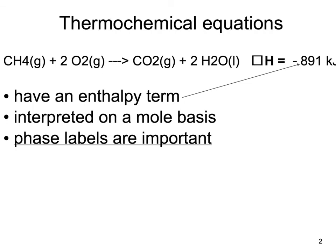When writing a thermochemical equation, you write the normal balanced equation, use your phase labels — they're very important here — and we also add delta H. Our delta H here is negative 891 kilojoules, and that enthalpy term is what makes this a thermochemical equation. You can interpret this as one mole of CH4 reacting with two moles of O2 giving one mole of CO2 and two moles of H2O, and that reaction gives off 891 kilojoules of heat.